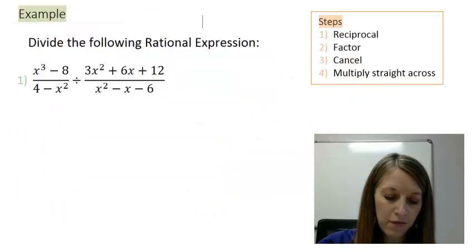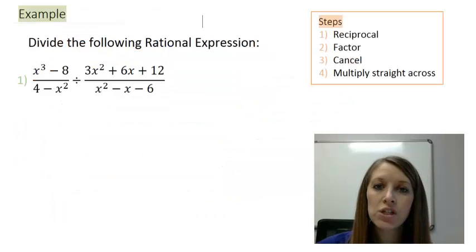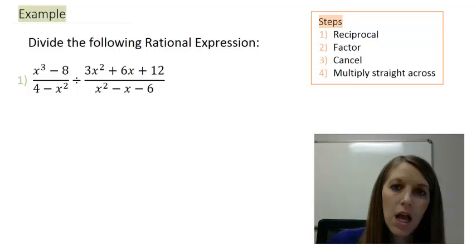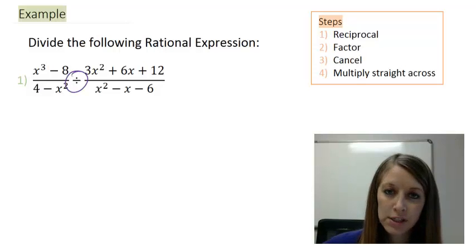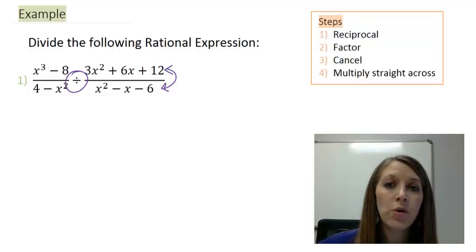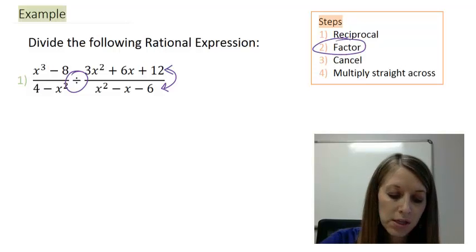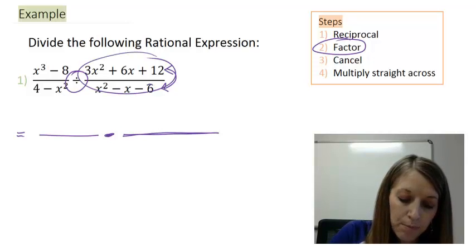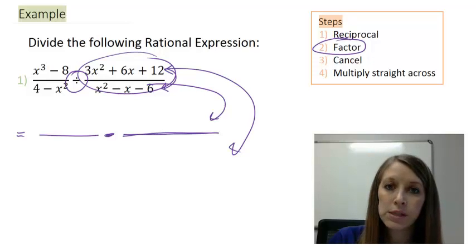Let's see an example. I believe you're well prepared enough to try this on your own, so pause the video and see how far you can get. Since this is a division problem, my first step is to take the reciprocal of the second fraction and change it into a multiplication problem. I'm going to combine that step with my factoring step to save space — making sure when I factor the second fraction, the bottom moves to the top and the top moves to the bottom.